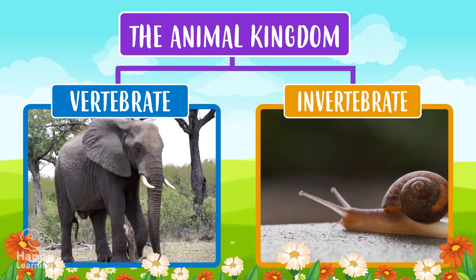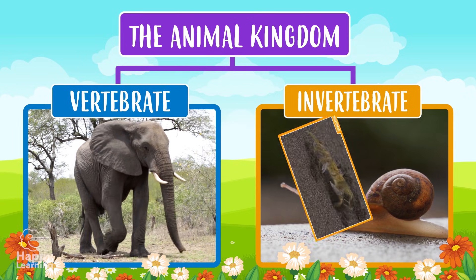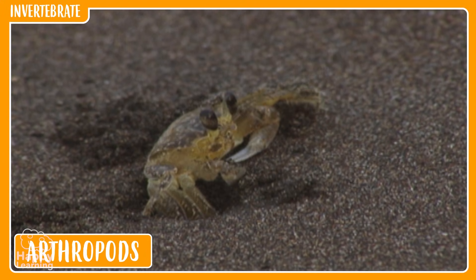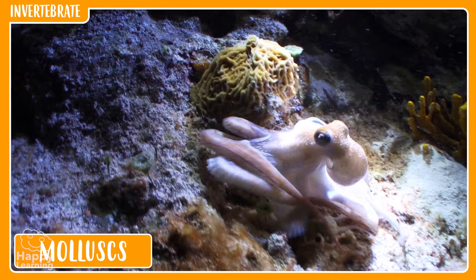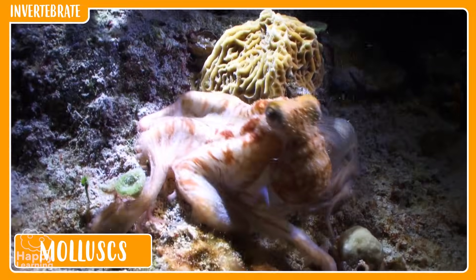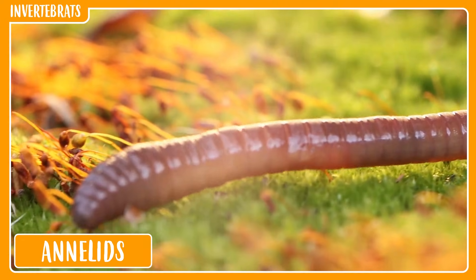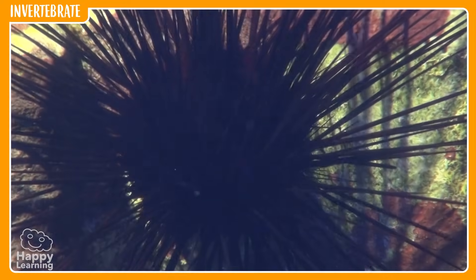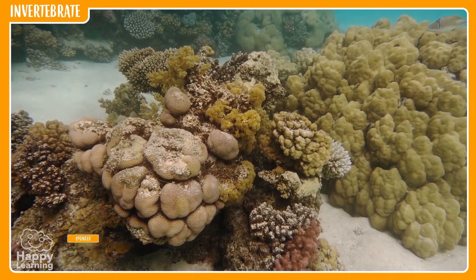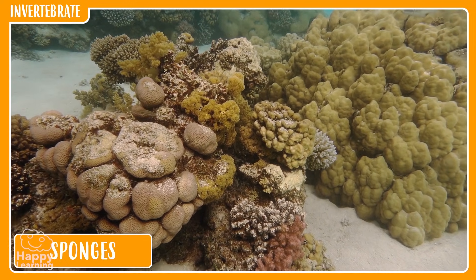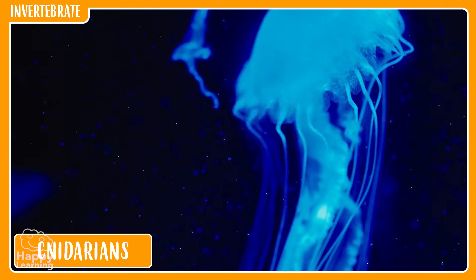Within the group of invertebrates — those animals that don't have bones — there are arthropods, like this shy crab; mollusks, like this octopus and its eight tentacles; annelids, like this worm; echinoderms, like this spiky sea urchin; sponges; and cnidarians, like this shiny jellyfish.